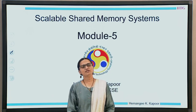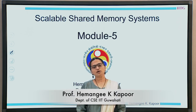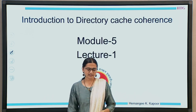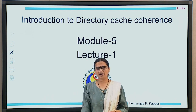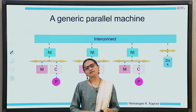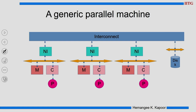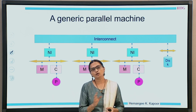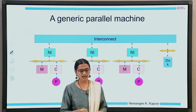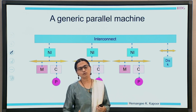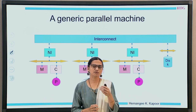Hello everyone, we are starting module 5 now. The topic of the module is Scalable Shared Memory Systems. This is lecture number 1, Introduction to the Directory Cache Coherence. A quick recap: we started this subject with understanding what a parallel computer looks like, and this slide shows a very big general purpose parallel machine which is connected over a scalable interconnect, where every node could be a multiprocessor node or a single core processor connected through a network interface.